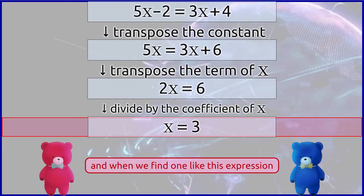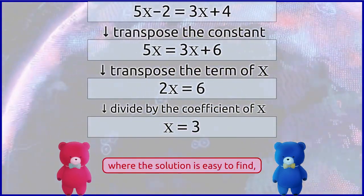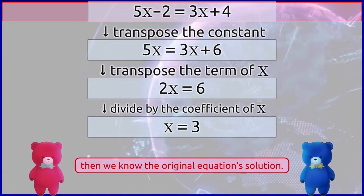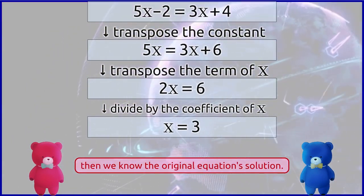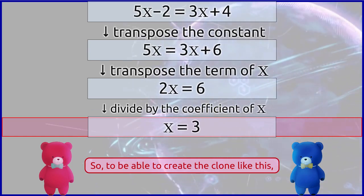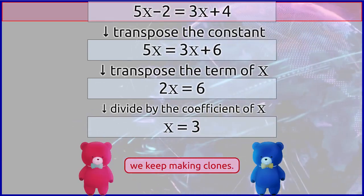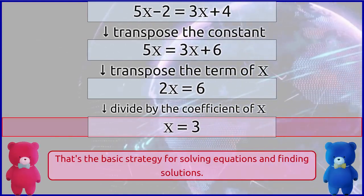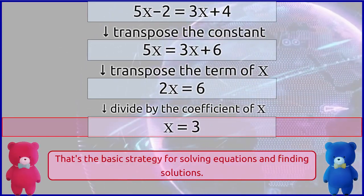At one point, we find one like this expression where the solution is easy to find. Then we know the original equation's solution. So, to be able to create the clone like this, we keep making clones. That's the basic strategy for solving equations and finding solutions.